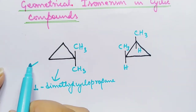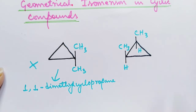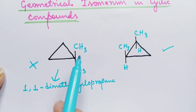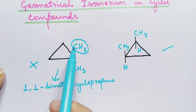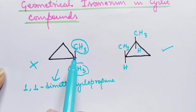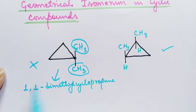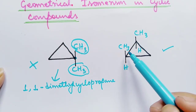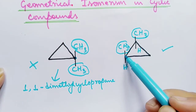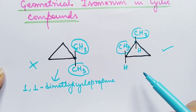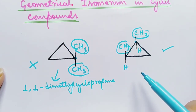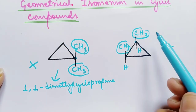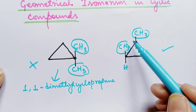The first one does not show geometrical isomerism whereas the second one does. The reason is that the two groups are on the same ring carbon atom, that's why it does not show geometrical isomerism. Whereas in the second one, the two groups are on different ring carbon atoms, that's why it shows geometrical isomerism.